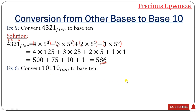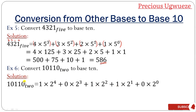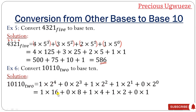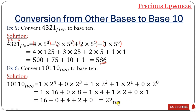The second example is to change 10110 base 2 to base 10. Number the positions from right: 0, 1, 2, 3, 4. Expand: 1 times 2⁴ plus 0 times 2³ plus 1 times 2² plus 1 times 2¹ plus 0 times 2⁰. Simplifying: 2⁴ is 16, 2³ is 8, 2² is 4, 2¹ is 2, 2⁰ is 1. Multiplying out: 16 plus 0 plus 4 plus 2 plus 0 equals 22 in base 10.